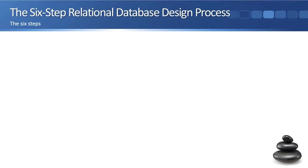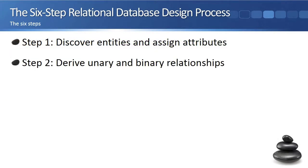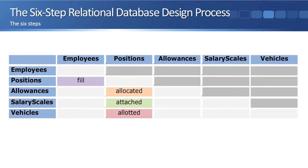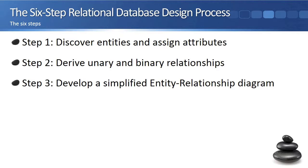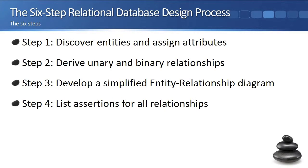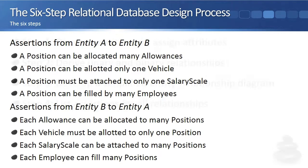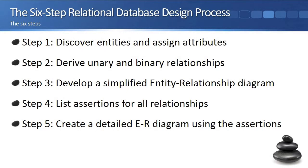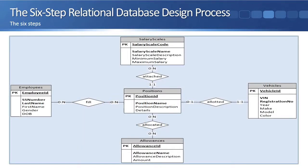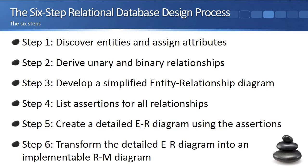Here is a summary of the six steps. Step 1: Discover entities and assign attributes. Step 2: Derive unary and binary relationships. Step 3: Develop a simplified ER diagram. Step 4: List assertions. Step 5: Create a detailed ER diagram using the assertions. Step 6: Transform the detailed ER diagram into an implementable RM diagram.